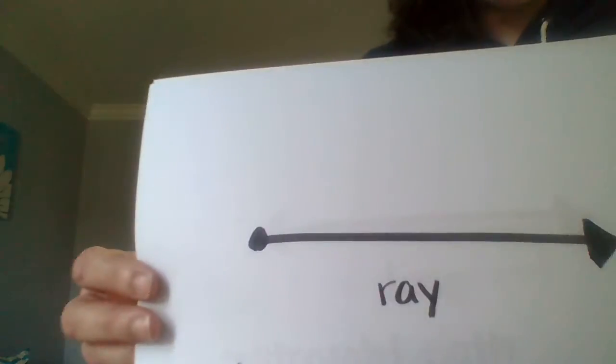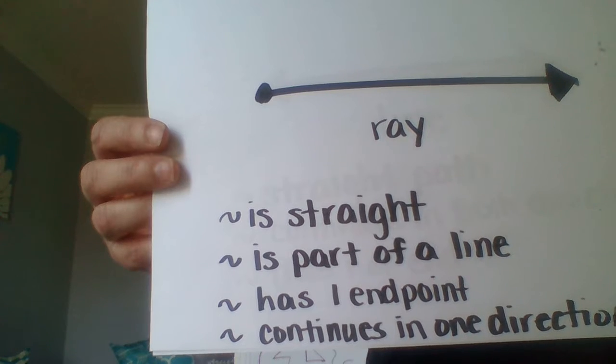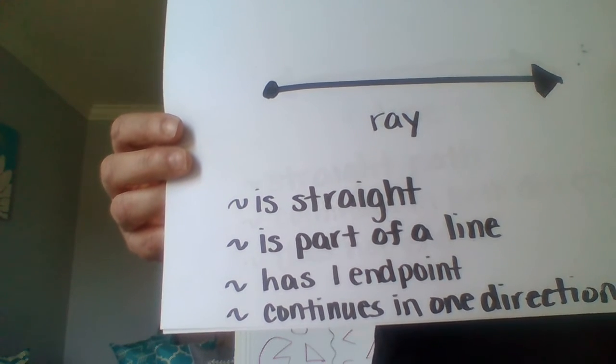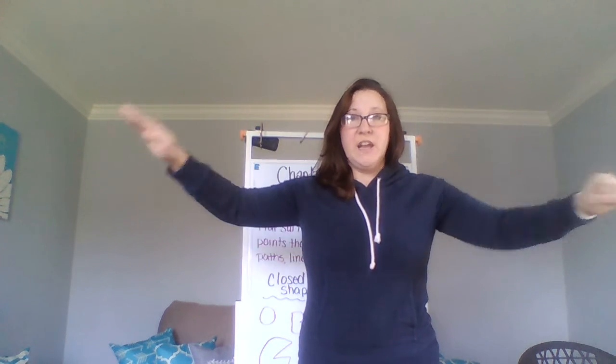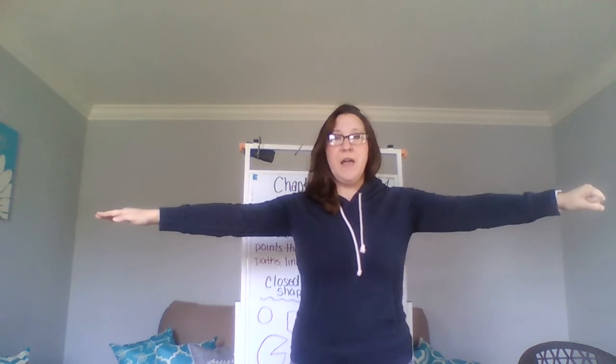The next one is a ray. A ray is a straight part of a line that has an end point and continues in one direction. For our Simon Says gesture, you're going to make one fist and one open hand in a straight line. It does not have to be horizontal — it can be tilted or even straight up and down. So a ray has one closed fist, one open hand, and it is straight.